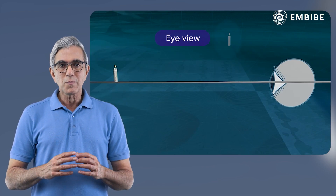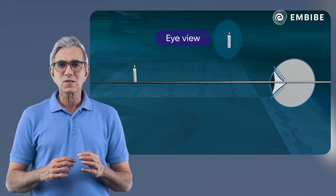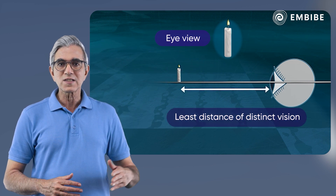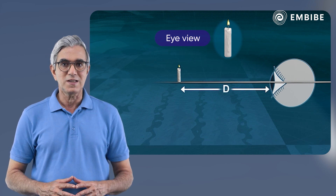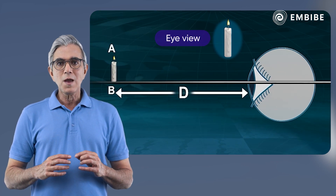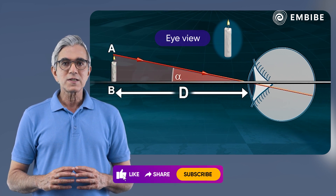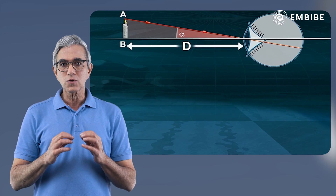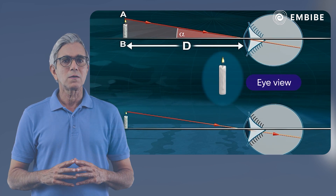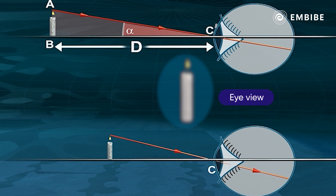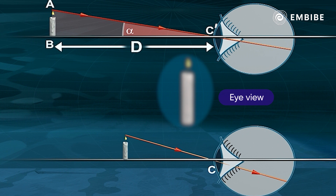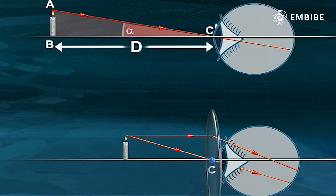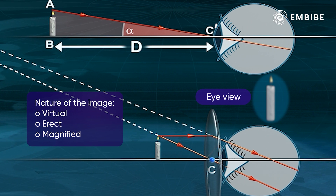When we bring an object closer to our eyes, there is a certain limit to which the object can be clearly seen. This limiting distance is known as the least distance of distinct vision, expressed by D. Suppose an object AB subtends an angle alpha at the eye when it is at the least distance of distinct vision D. If we try to bring the object closer than this limit, the image becomes blurred. Hence we place a converging lens close to the eye and move the object closer than the least distance. When the object lies between the lens and its principal focus, a virtual, erect, and magnified image is obtained.